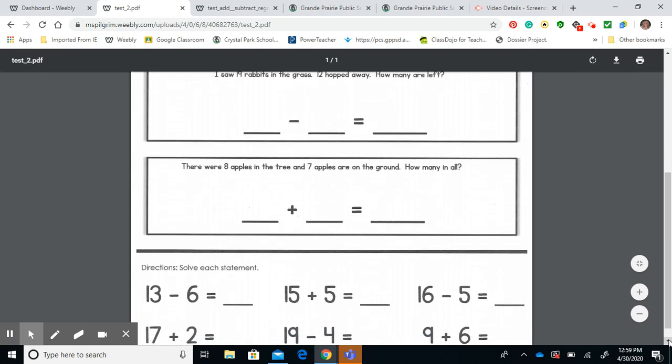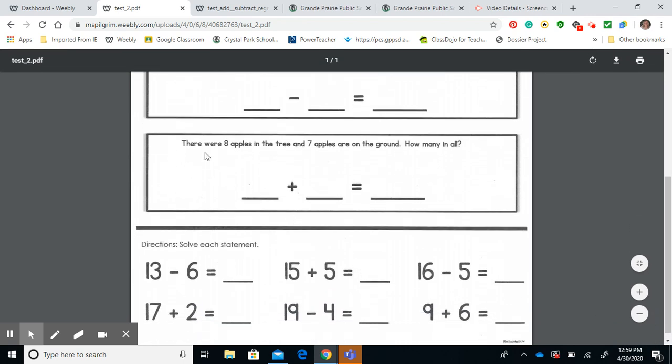Now let's go down to the second word problem. This word problem, as you can see, is addition. There were eight apples in the tree and seven apples are on the ground. How many in all?